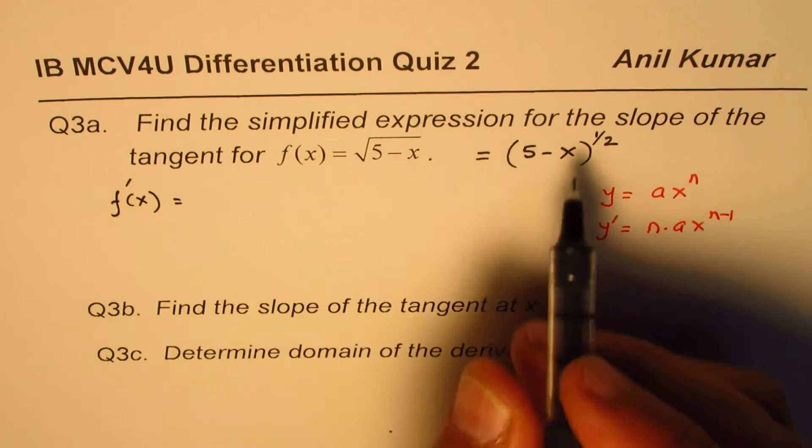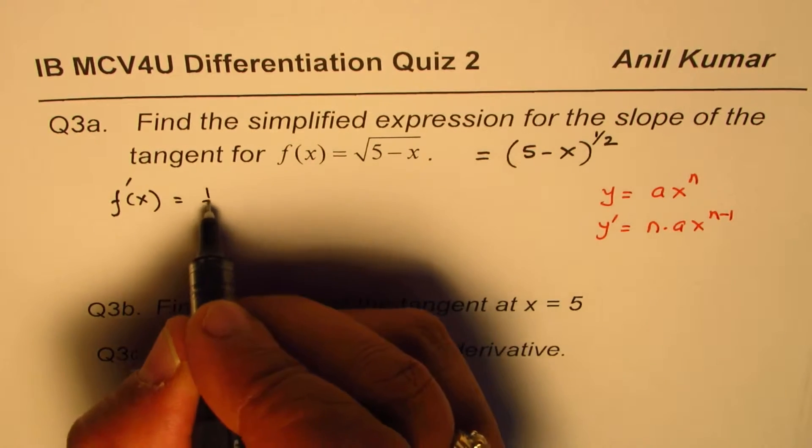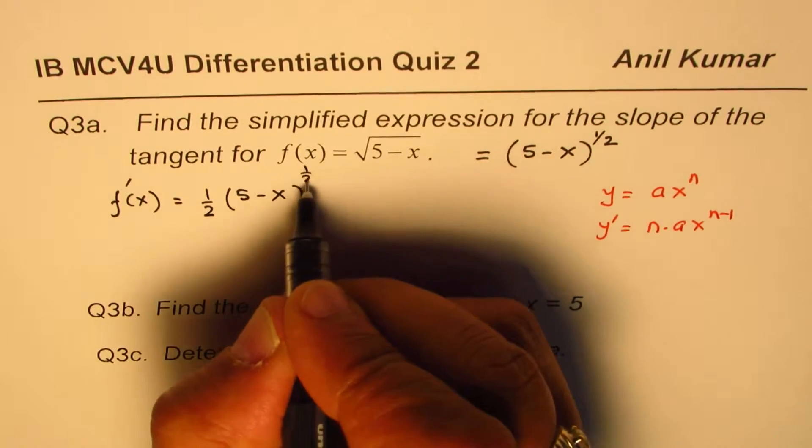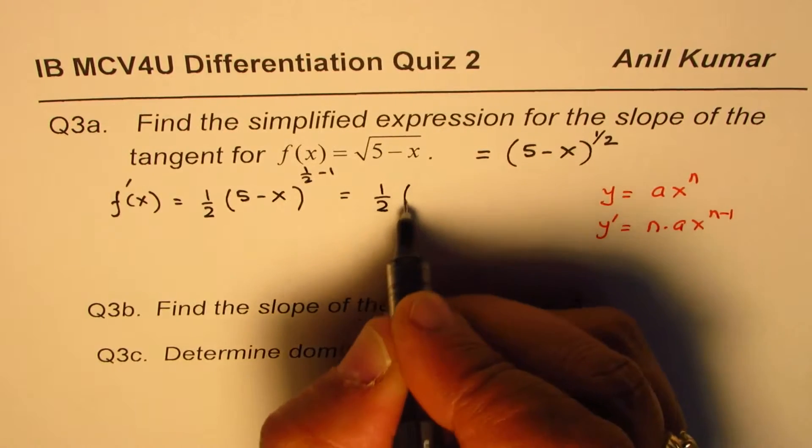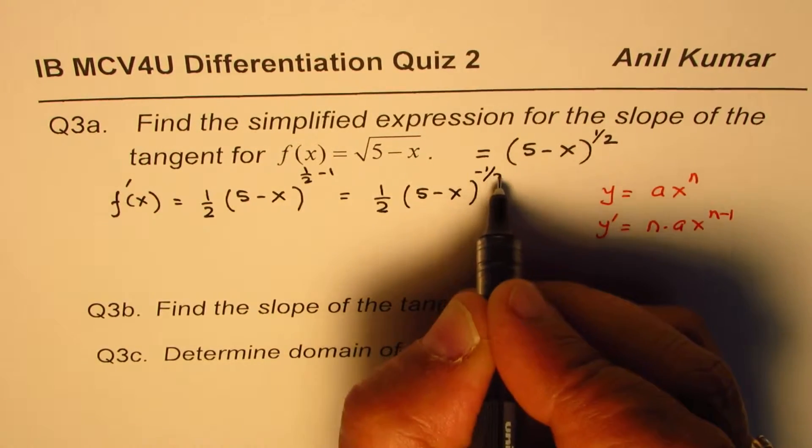So the derivative here—we wrote it as 1/2 as an exponent. So it is 1/2 times (5 - x) to the power of... and this is 1/2 times (5 - x) to the power of -1/2.